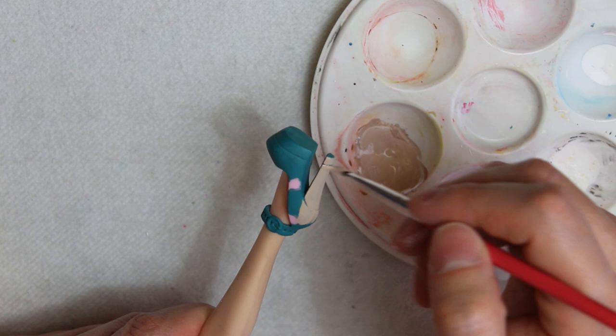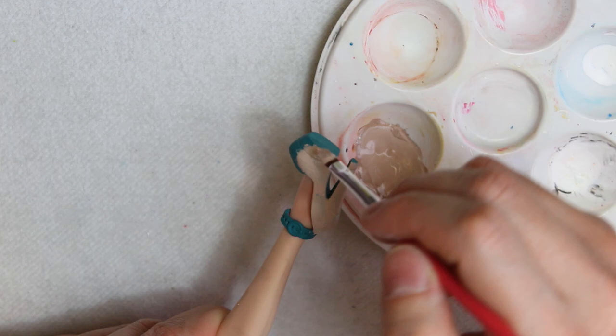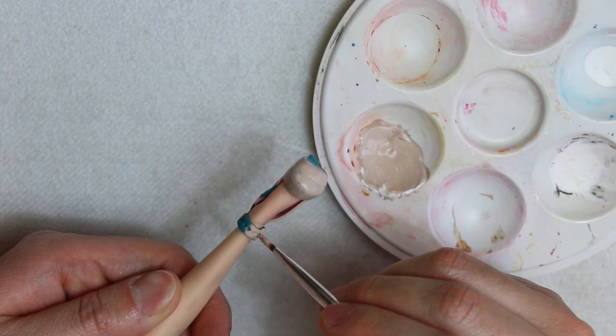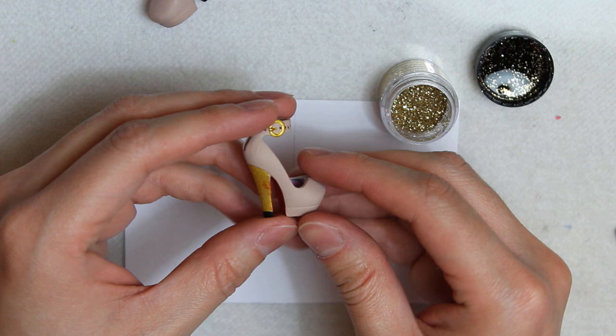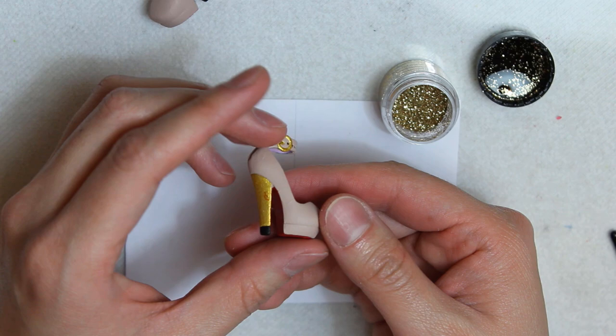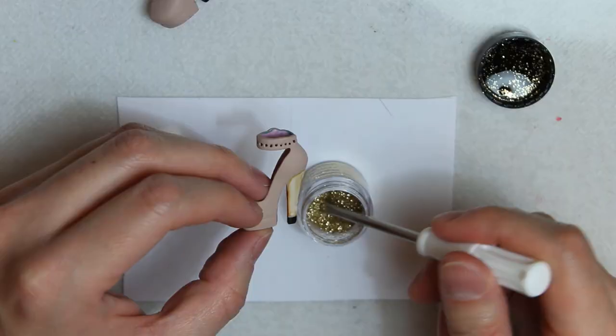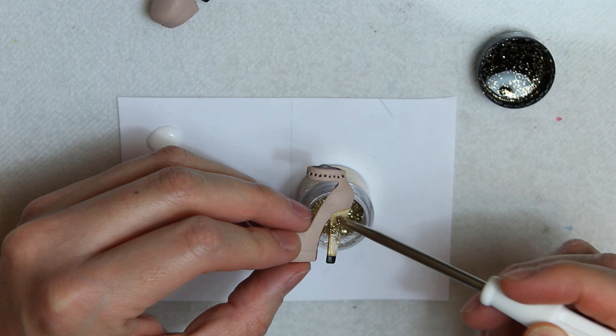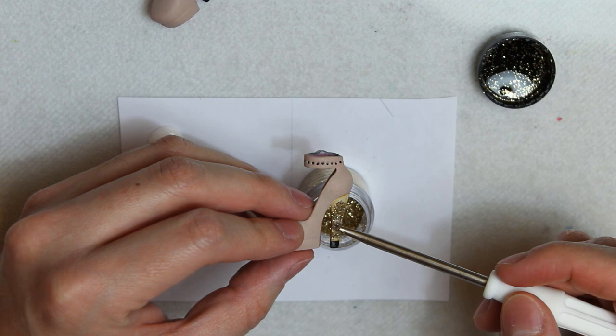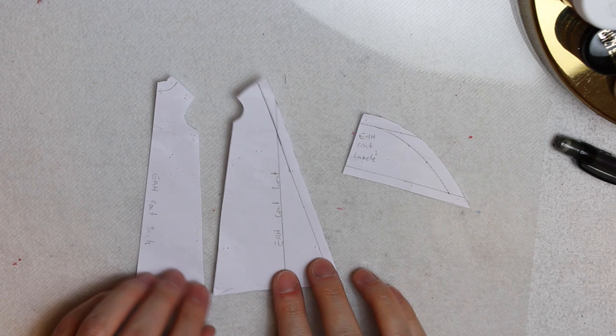For the shoes, I took these Scarily Ever After Mary Janes that once belonged to my Lagoona Blue Neptune doll that, well, she's no more. And I'll paint them beige. After adding some details, I have these very nice shoes, but I was missing the sparkle. So I'll cover the heels with glue and add golden glitter.